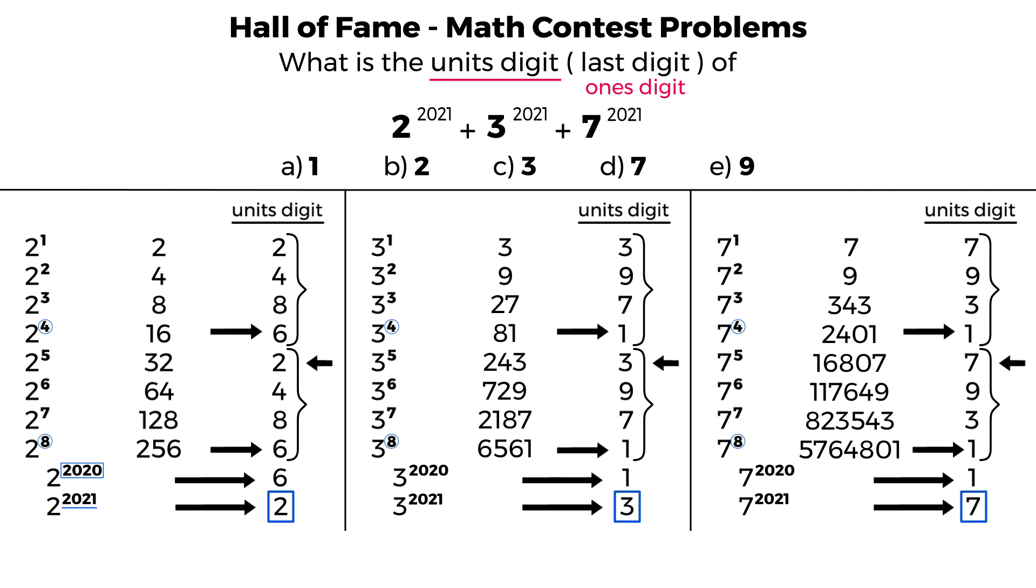The units digit of 2 to the power of 2021 is 2. The units digit of 3 to the power of 2021 is 3. And the units digit of 7 to the power of 2021 is 7. And if you add them all up, you will get 12. And the units digit of 12 is 2. And therefore, that is the units digit of this big number.